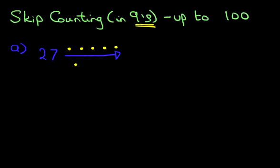There's five, six, seven, eight, and nine. Our starting point is 27. Let's start counting. 28, 29, 30, 31, 32,